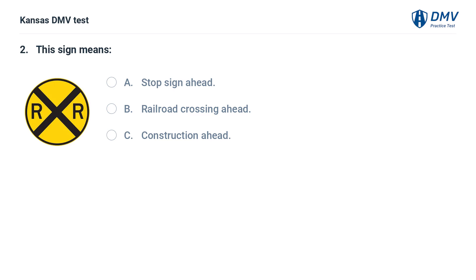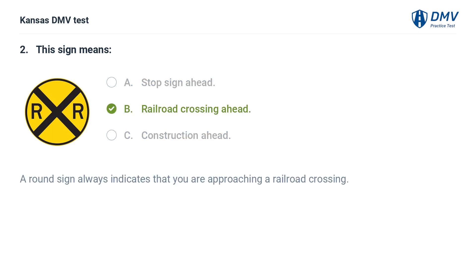This sign means: A. Stop sign ahead. B. Railroad crossing ahead. C. Construction ahead. The answer is B. Railroad crossing ahead. A round sign always indicates that you are approaching a railroad crossing.